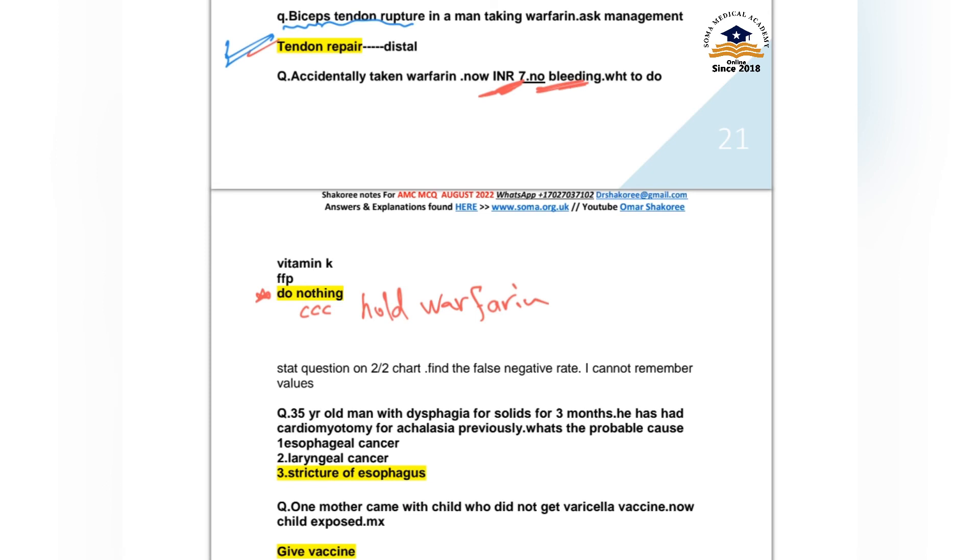Patient who is accidentally taking warfarin and now INR is 7, but there is no bleeding. What to do? Do nothing, just stop the warfarin. If there is an option to stop warfarin or do nothing, just stop the warfarin.